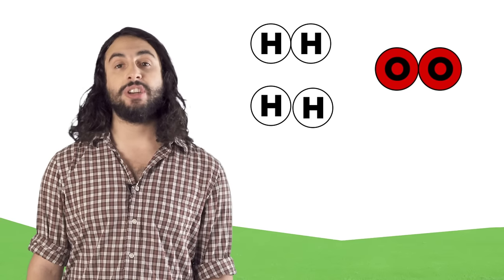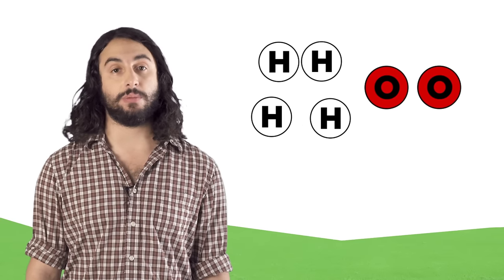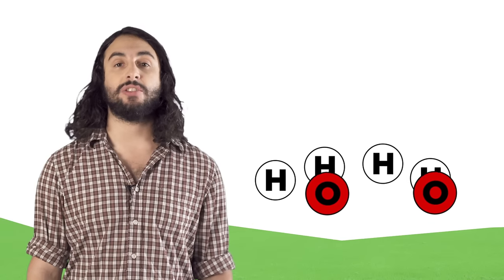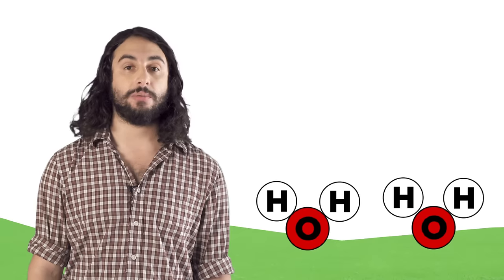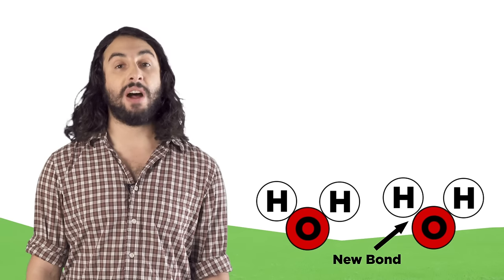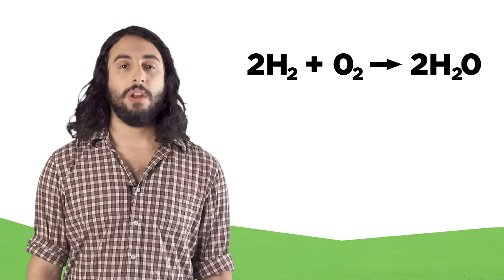A chemical change is one in which the chemical composition of the substance does change. Chemical bonds between atoms must break and form to generate completely new substances. Here, hydrogen gas and oxygen gas combine to form water. Notice that hydrogen and oxygen used to be connected to themselves and are now connected to each other — new bonds, new substance, chemistry has occurred.